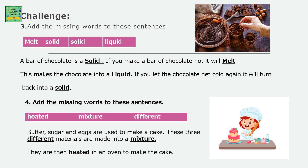Add the missing words to these sentences. Keywords: heated, mixture, different. Butter, sugar and eggs are used to make a cake. These three different materials are made into a mixture. They are then heated in an oven to make the cake.